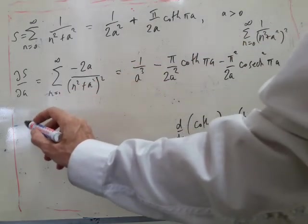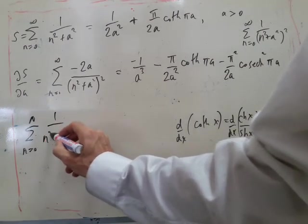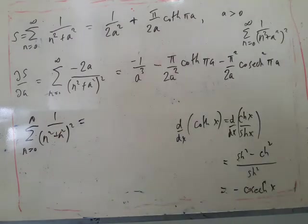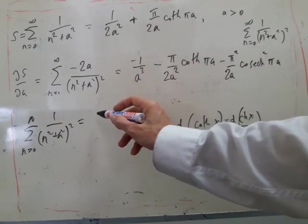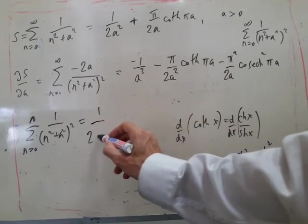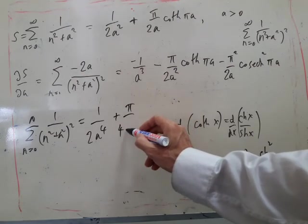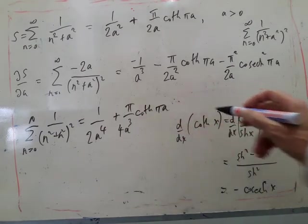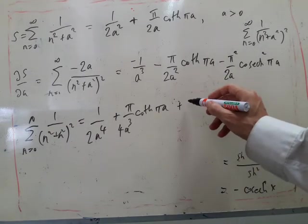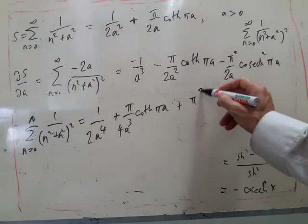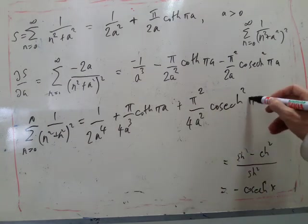So final answer, I'll expand everything. Minus 2A gives me 1 over 2A to the 4, plus pi over 4A cubed coth pi A, plus pi squared over 4A squared times coshech squared pi A.